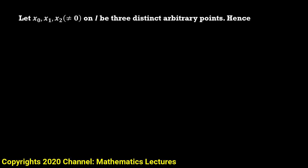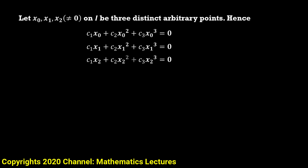Substituting x₀ into our expression, we get c1·x₀ plus c2·x₀² plus c3·x₀³ equal to 0. Substituting x₁, we get c1·x₁ plus c2·x₁² plus c3·x₁³ equal to 0. And substituting x₂, we get c1·x₂ plus c2·x₂² plus c3·x₂³ equal to 0.